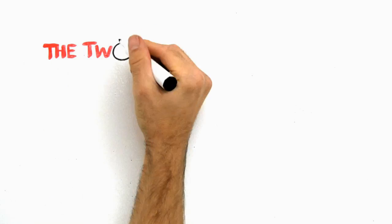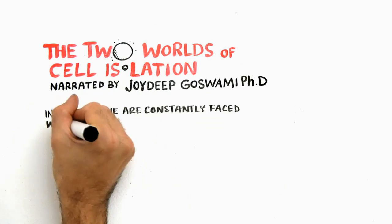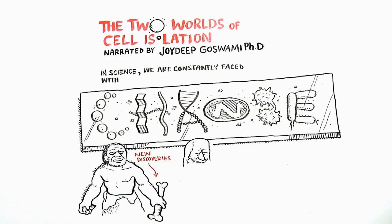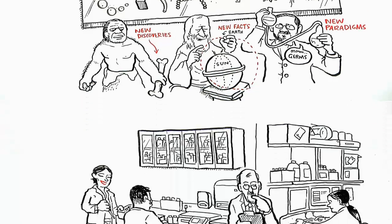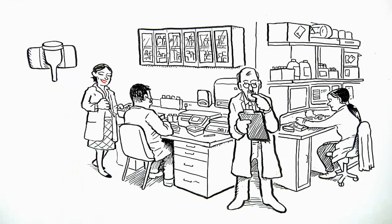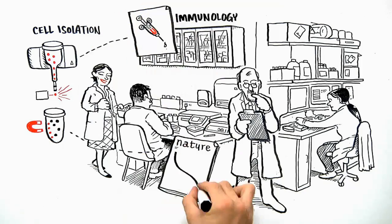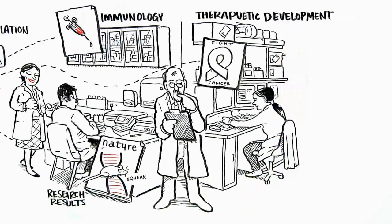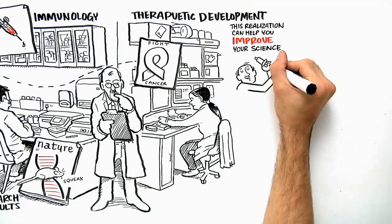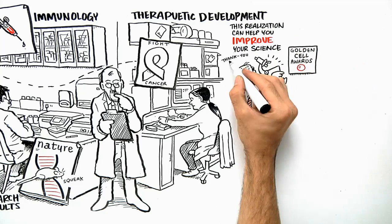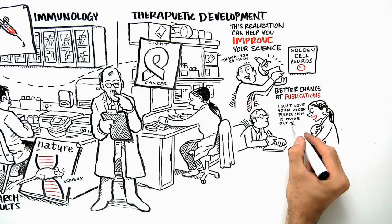I'm here to talk to you about the two worlds of cell isolation. In science, we're constantly faced with change — new discoveries, new facts, new paradigms. I'm going to talk to you about something you may not have realized about cell isolation and how technologies used impact immunology, results, and therapeutic development. This realization can help you improve your science, but also may help you with a better chance at publications, authorship, and grants.